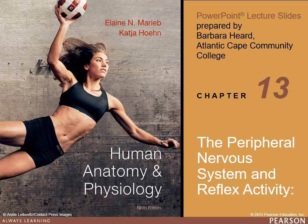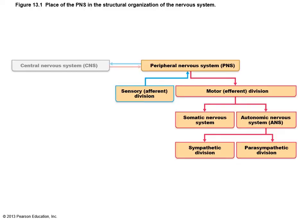This chapter is over the peripheral nervous system and reflex activity. This is where we are in our discussion — we've covered the central nervous system in chapter 12, and in this chapter we're going to be focusing on the peripheral nervous system.